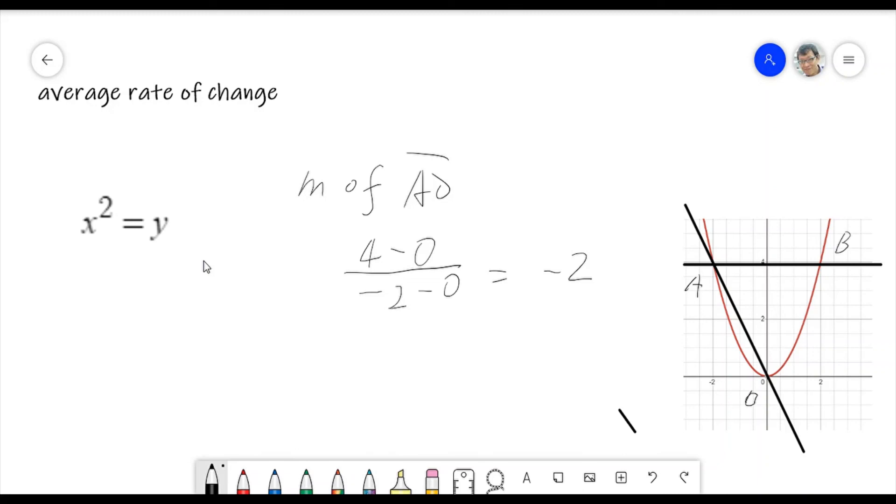Which means that when X changes one unit, Y will change two units, but in the reverse way. We also can explain very well for this one. From O until A, the X changes go to the smaller, negative 0 to negative 2, but on the contrary, Y changes to the bigger from 0 to 4, two times. But it's not the same trend as X change. X change to small, Y change to big.